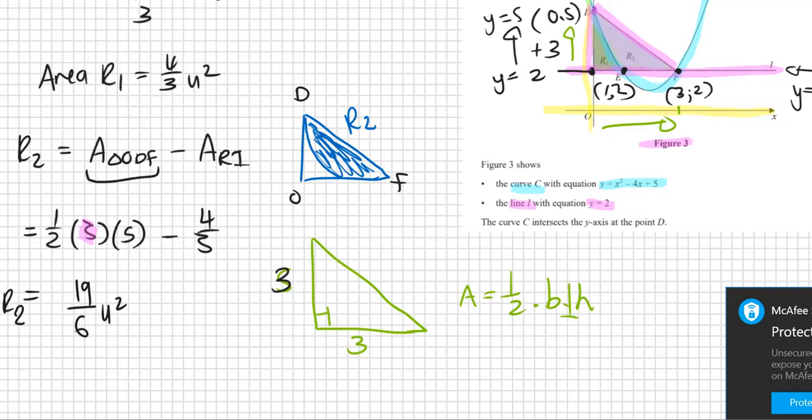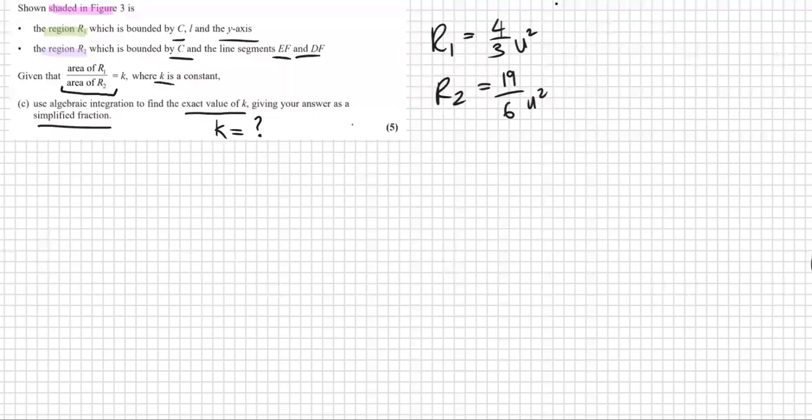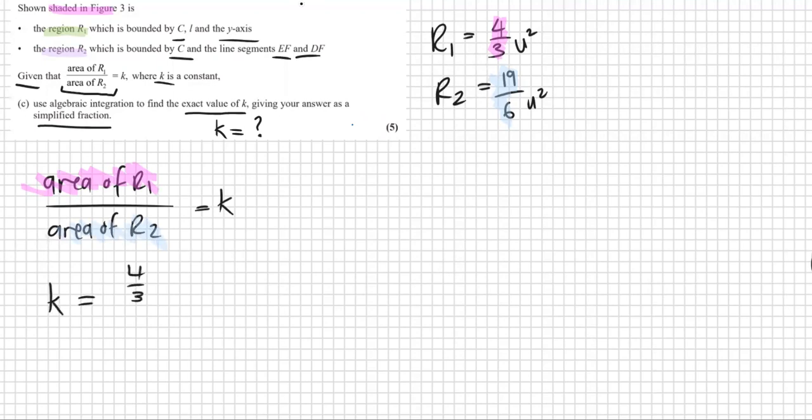Last part of the question. It says that given that area of R1 divided by the area of R2 is K, what is K? So we just do our areas. Area of R1 was 4 over 3 and area of R2 was 19 over 6. And that will give us our K. So in the end, K equals 4 over 3 divided by 19 over 6, which equals 8 over 19. And that is K.